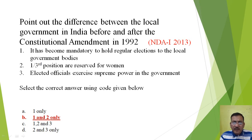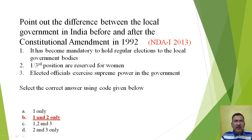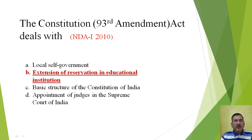The third option — that elected officials exercise supreme power in the government — is not correct. The first and second options are the correct options as far as the Amendment Act of 1992 is concerned, which deals with giving powers to the local body.